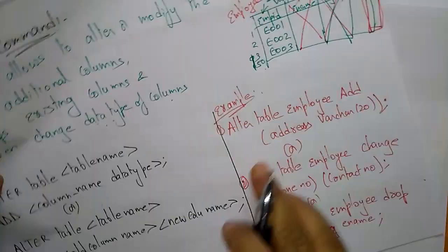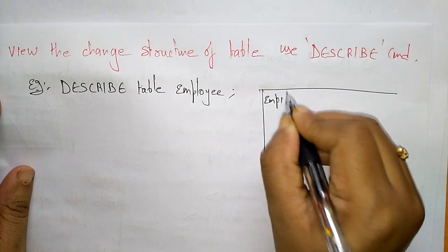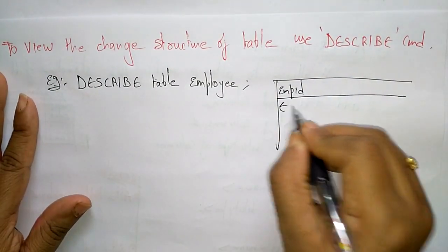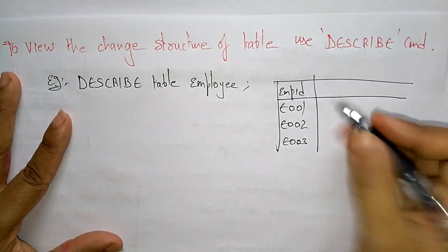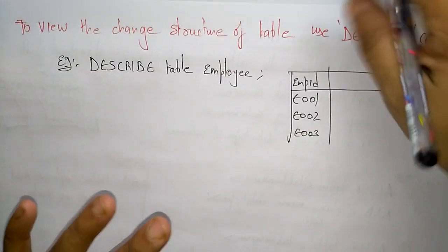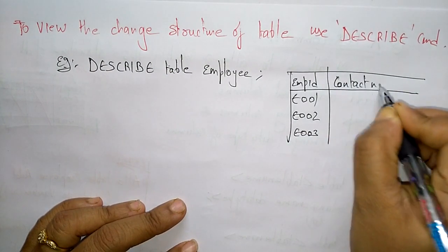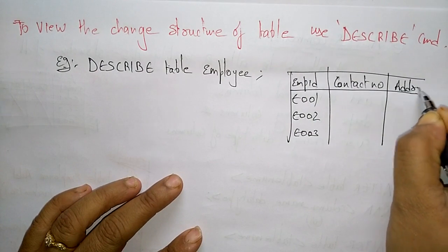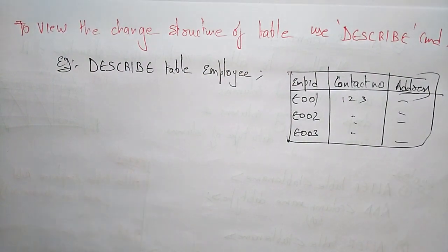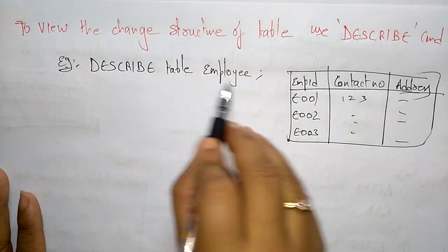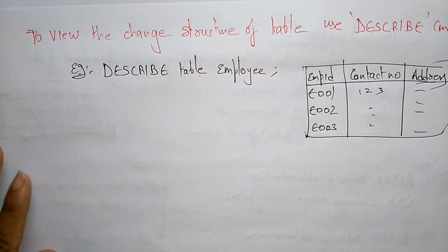So whenever you write DESCRIBE employee, you can see all the changes you have done on that table. For example: the employee ID data type was changed to VARCHAR; the employee name was removed; the age is also not there; phone_number was changed to contact_number; and the address field was added. So this is how DESCRIBE table_name displays the altered table structure. This is about the ALTER command.